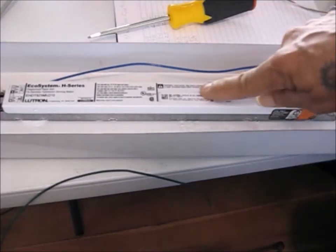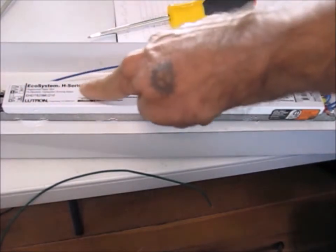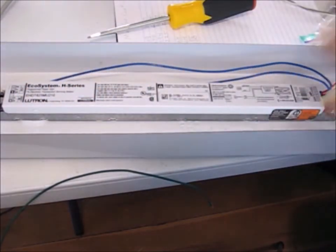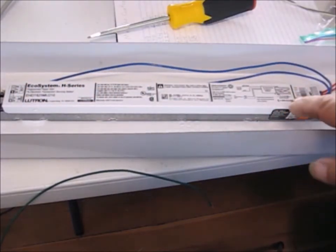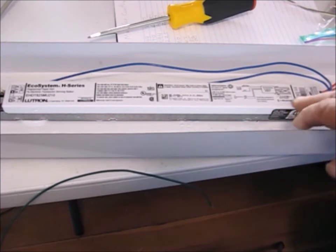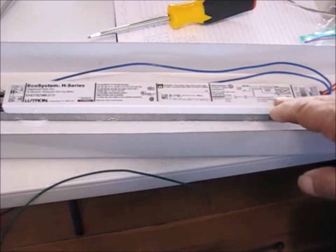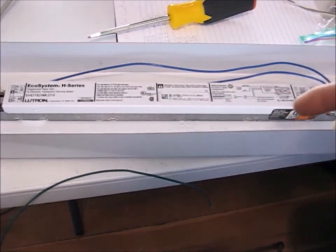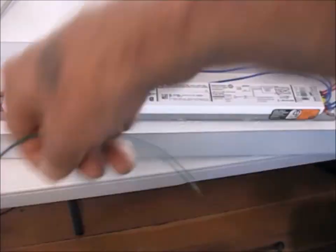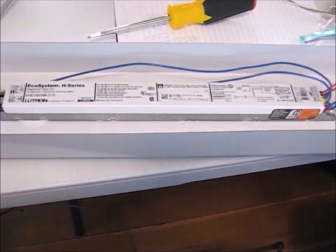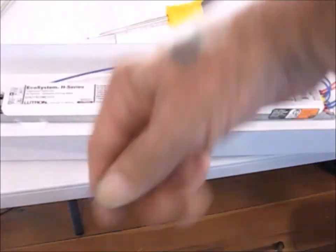Finally, let's take a look at an ecosystem H-series ballast. This one takes 25 watt, two or four foot lamps only, and there's nothing DALI about it on the label and probably nothing DALI about it in the product literature.